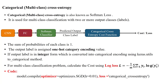Hello everyone. The categorical cross-entropy is used whenever we are having a multiclass classification problem. It is also called multiclass cross-entropy, and another name is the softmax loss function. It is used for multiclass classification which has two or more output labels.